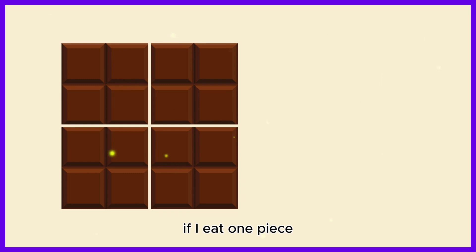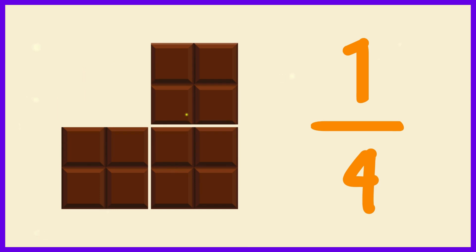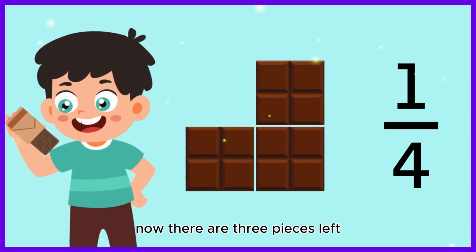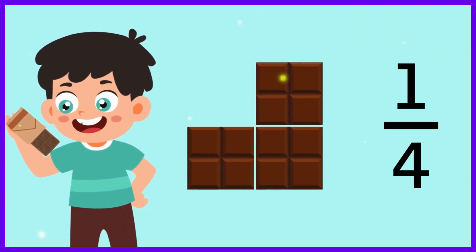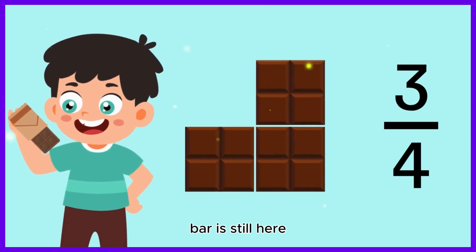If I eat one piece, I'm eating one-fourth of the chocolate bar. Now, there are three pieces left. Which means three-fourths of the chocolate bar is still here.